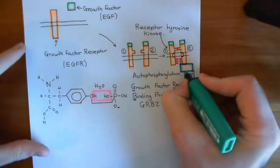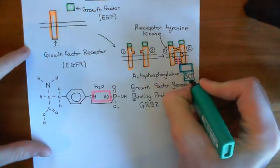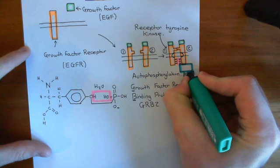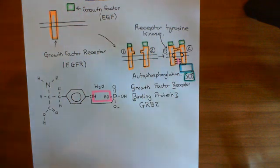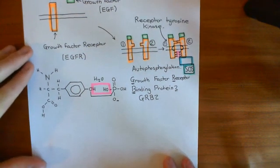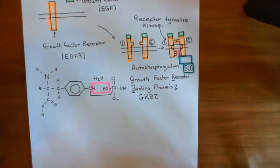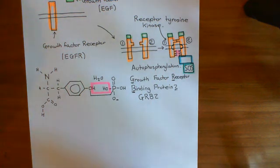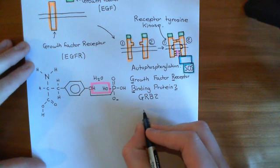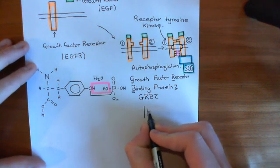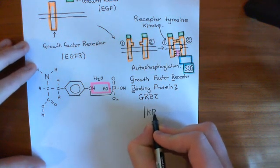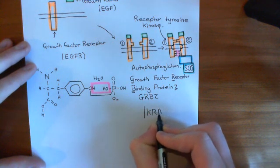What SOS is going to do, once it's bound to this GRB2, it becomes active, and basically it is going to activate a monomeric G-protein. So, not the usual G-proteins used in G-protein coupled receptors — those are heterotrimeric G-proteins. This is a monomeric G-protein, and this is finally where we see KRAS. KRAS basically is a monomeric G-protein.